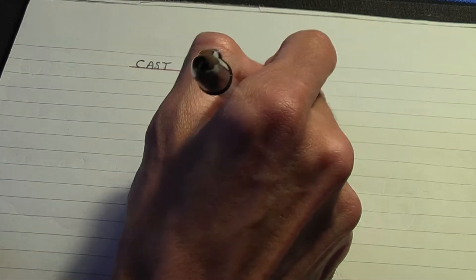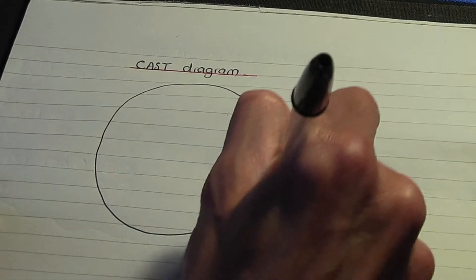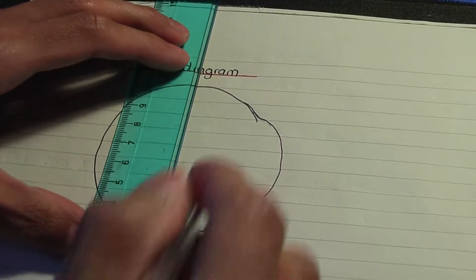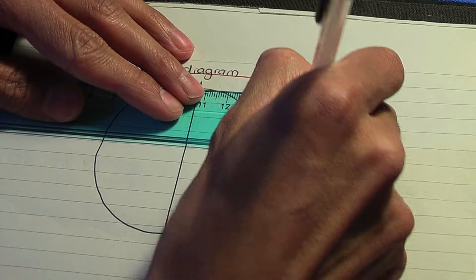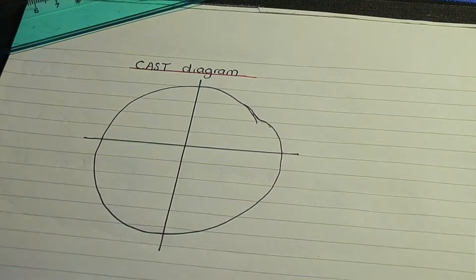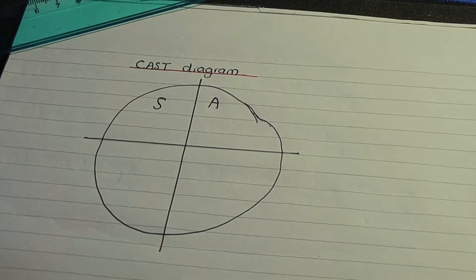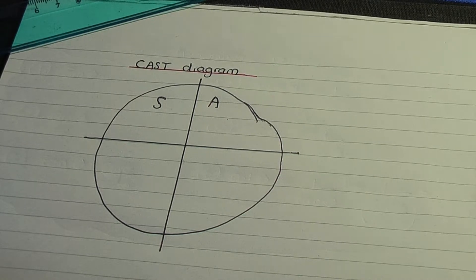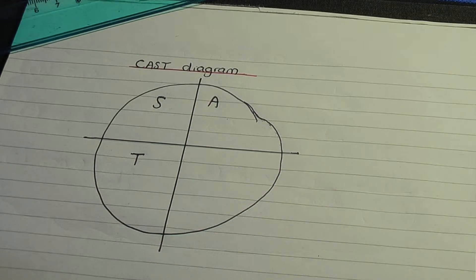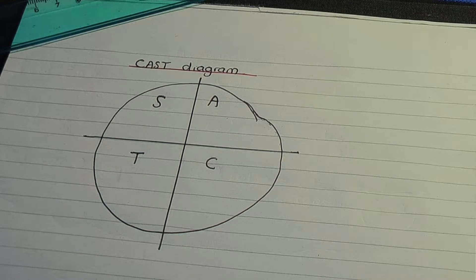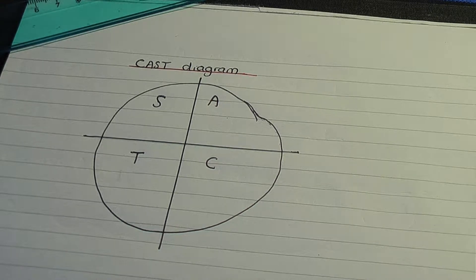Basically we have a circle, and this circle is divided into four quadrants. In the first quadrant we label that A, the second quadrant we label S, the third quadrant we label T, and in the last quadrant we label C. I'll explain why we use those letters shortly.